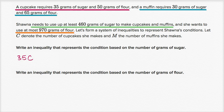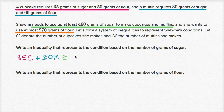And how many grams of sugar is she going to use for the muffins? That's going to be 30 grams of sugar per muffin, so plus 30M. This is the total sugar from the cupcakes plus the total sugar from the muffins — together, the total sugar she's using. We're told she needs to use at least 460 grams of sugar, so this has to be greater than or equal to 460.